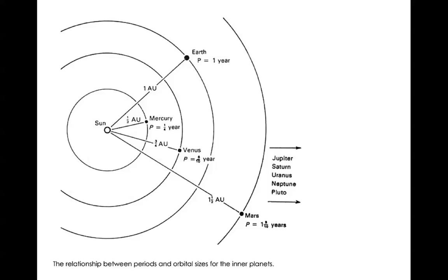In fact, the same P² = A³ relationship, or P² is proportional to A³, works for the moons of Jupiter, as we'll see when we discuss those later.